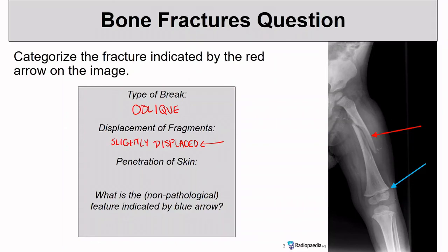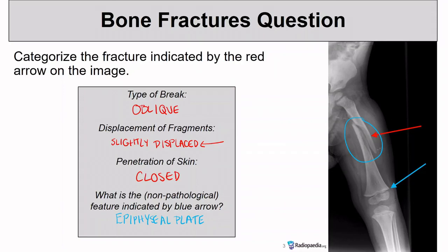What about skin penetration? This is a closed fracture — you might see a slight difference in the shape of the leg but you wouldn't see a bone sticking through the skin. The non-pathological feature shown at the blue arrow is an epiphyseal plate. This radiograph came from a two-year-old who fell from a high bed. Beyond the fracture, we can note the presence of epiphyseal plates, indicating this person is not fully developed and has not reached their adult height.